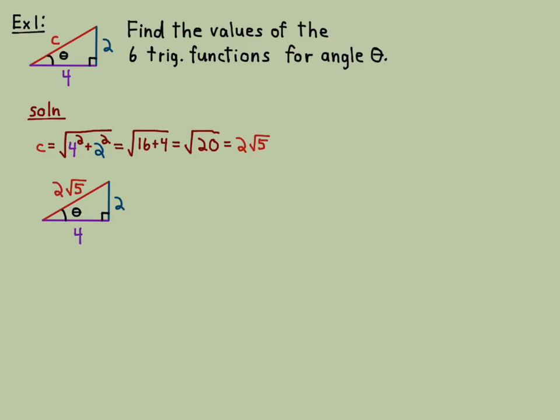I drew another picture and wrote in the length of the hypotenuse. Now that we know the lengths of all three sides and we know it's a right triangle, we can find all the values of all the trig functions for theta.